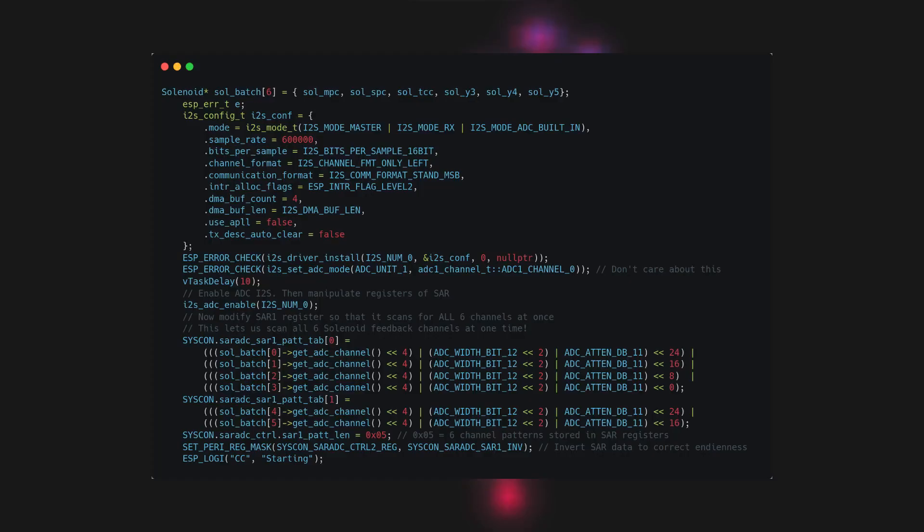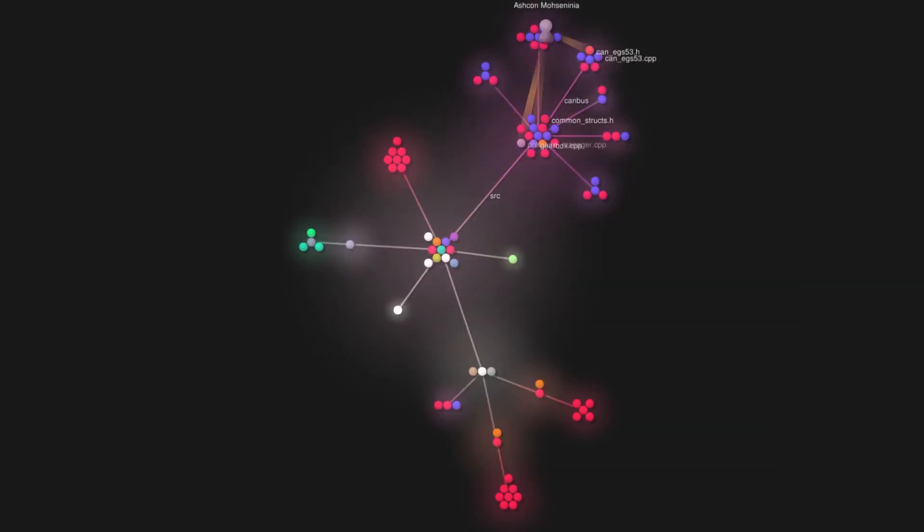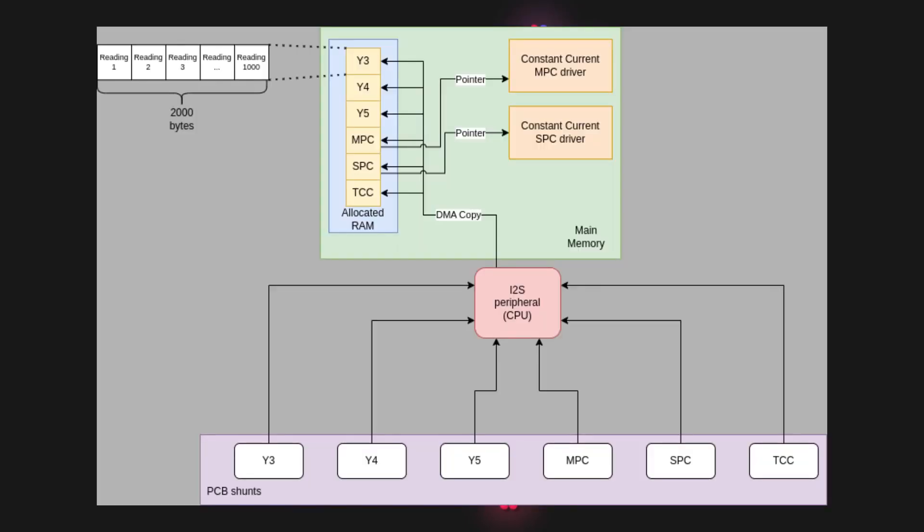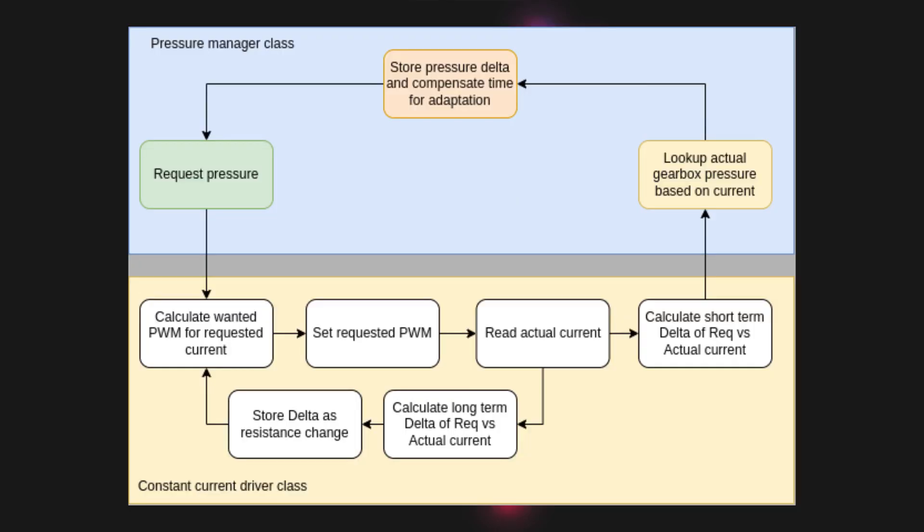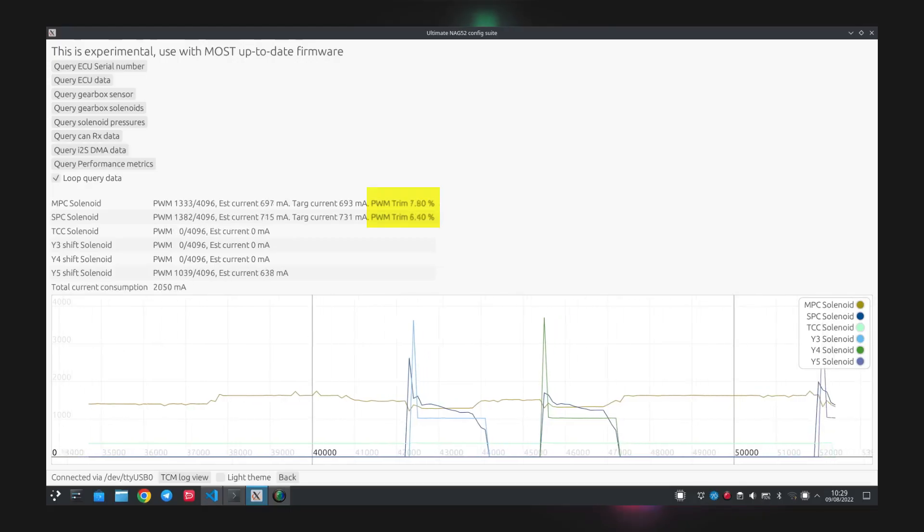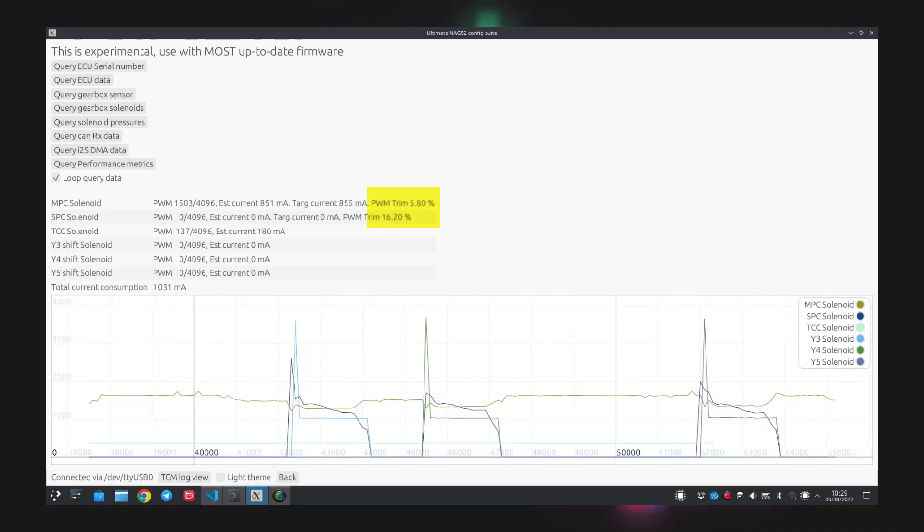The current reading is done by reading the analog voltage from each shunt resistor on the PCB. Thanks to me abusing the I2S peripheral on the ESP32 IC and some register manipulation, it's possible for the ESP32 to read all six solenoids at a frequency of 600kHz. As this is all done by an external peripheral on the CPU, it consumes almost no CPU usage, so the CPU on the TCU can do other things whilst polling the current simultaneously in the background. What's really cool with this is that the solenoid's armature position directly influences the solenoid's current draw, so it is actually possible to create a closed feedback loop where the TCU is aware of the actual real-time pressures in the gearbox based on the solenoid's current draw compared to what the solenoid wants to consume. It's actually possible to view this real-time change in current adjustment in my configuration app.